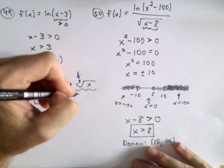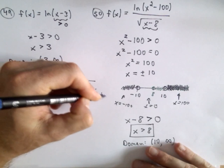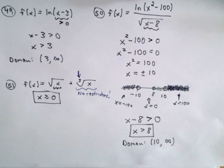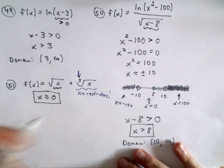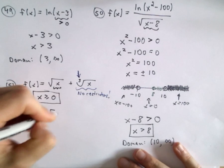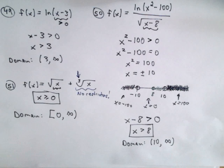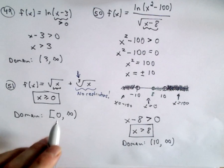So, from our second term, there are no restrictions. No restrictions on the domain from that second term. So, in this case, our domain will just simply be all values from zero to positive infinity. Again, we'll use brackets on the zero to indicate that we can use zero.